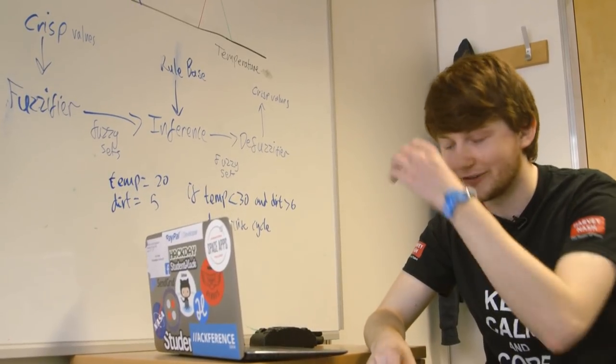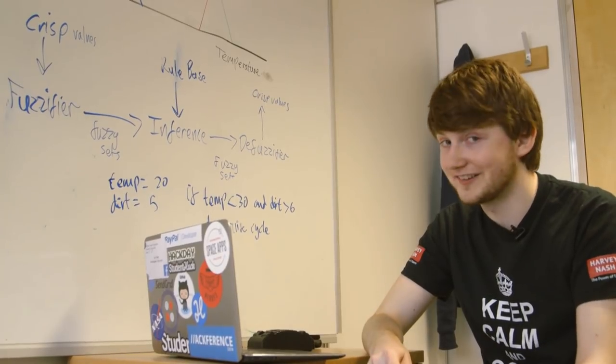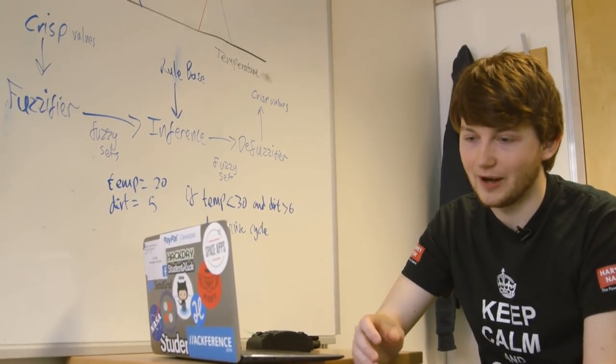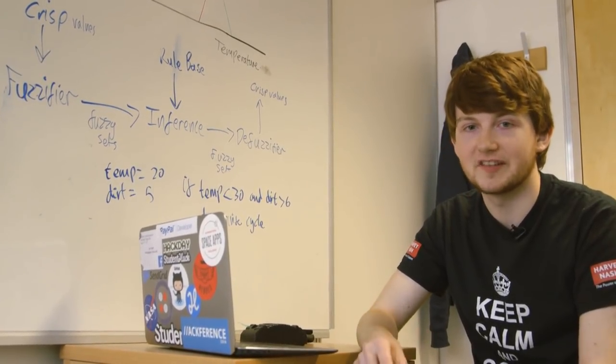Fuzzy Logic's been around a long time. It was first described in a paper around 1965 by a man called Lotfi Zadeh, and it's been in widespread usage for decades. But there's still a lot of advances being made in it.